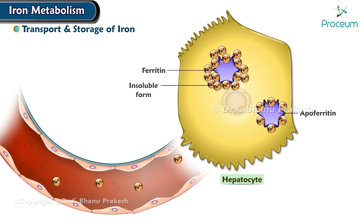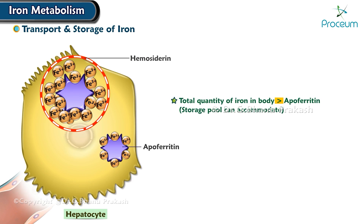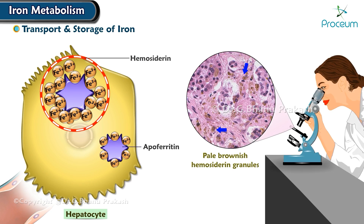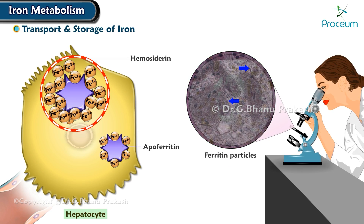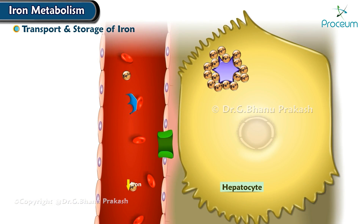Smaller quantities of iron in the storage pool are in an extremely insoluble form called hemosiderin. This is especially true when the total quantity of iron in the body is more than the apoferritin storage pool can accommodate. Hemosiderin collects in cells in the form of large clusters that can be observed microscopically as large particles. In contrast, ferritin particles are so small and dispersed that they usually can be seen in the cell cytoplasm only with the electron microscope.